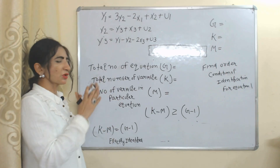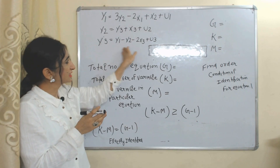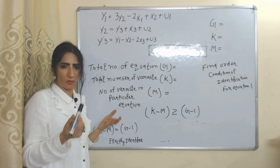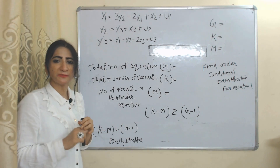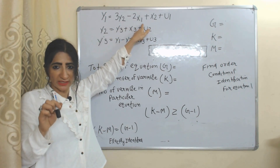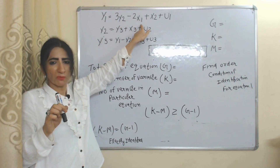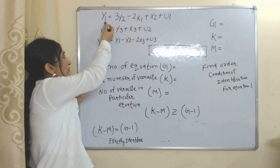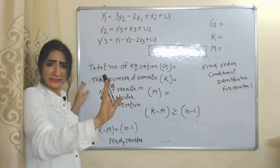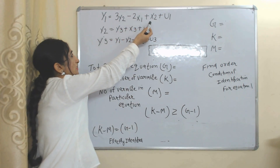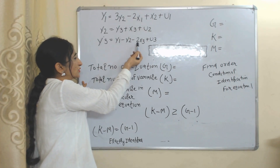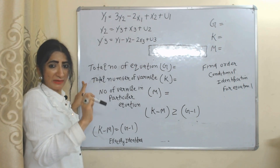Now we will solve one question. We have to find the order condition of identification for equation 1. As we know, Y1, Y2, and Y3 are our endogenous variables, or dependent variables. Y2, X1, X2, Y3, X3, Y1, Y2, and X3 are the independent variables in the system.